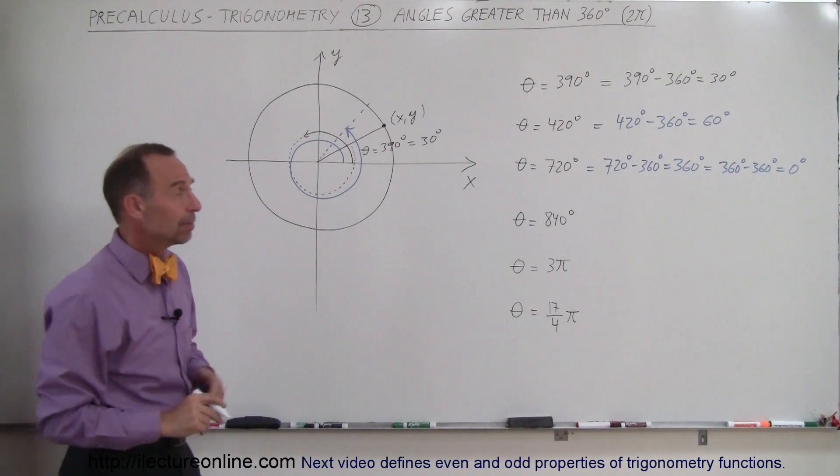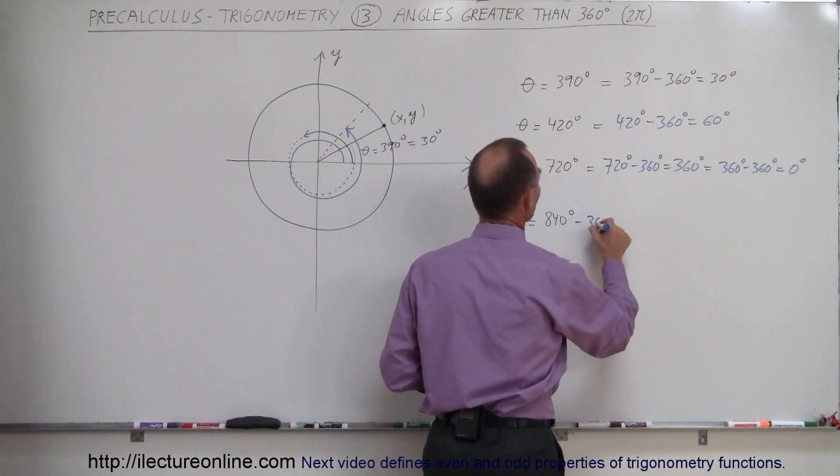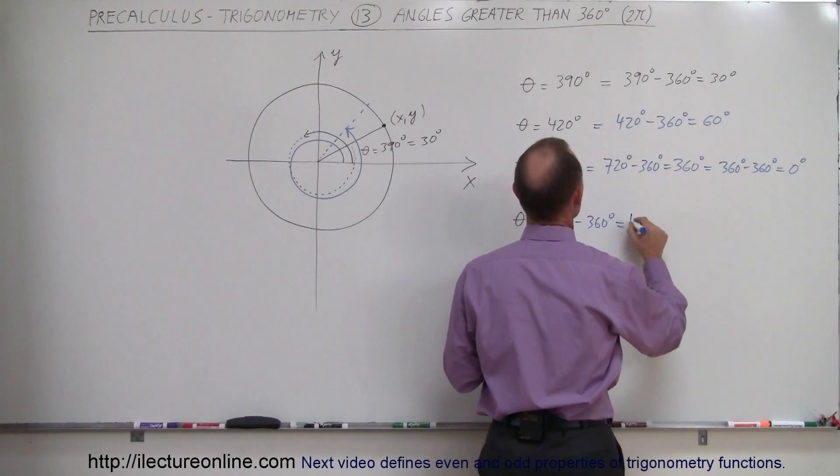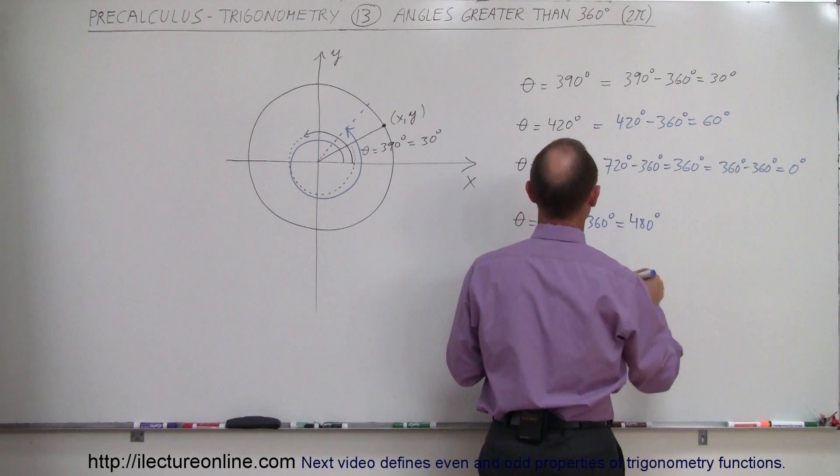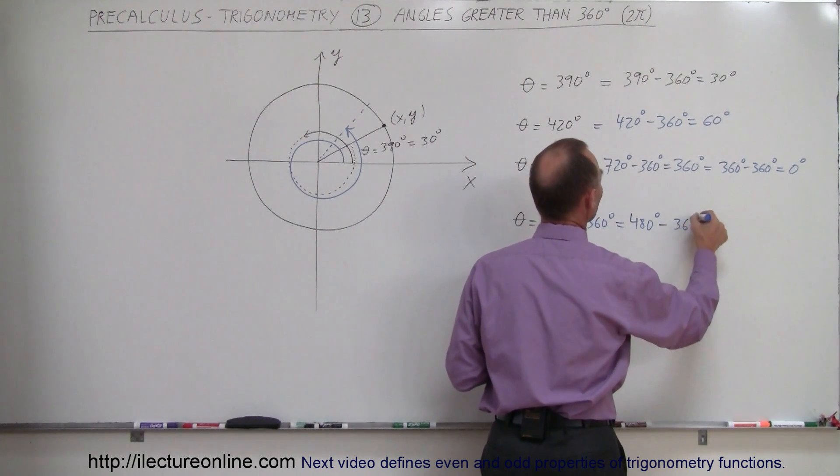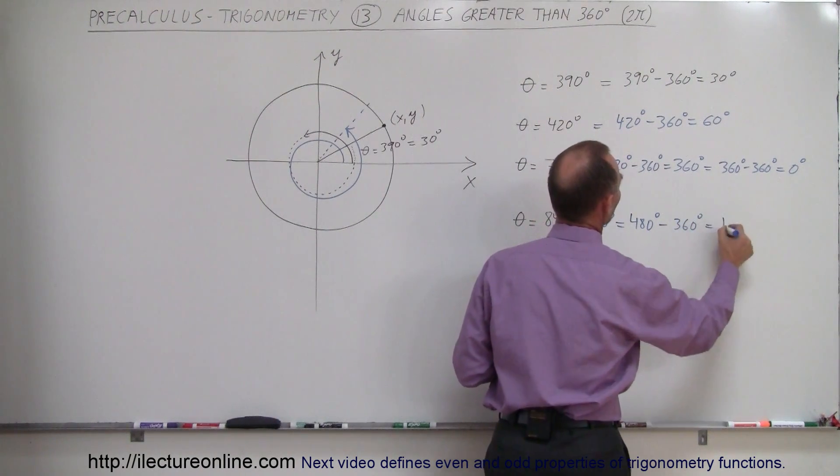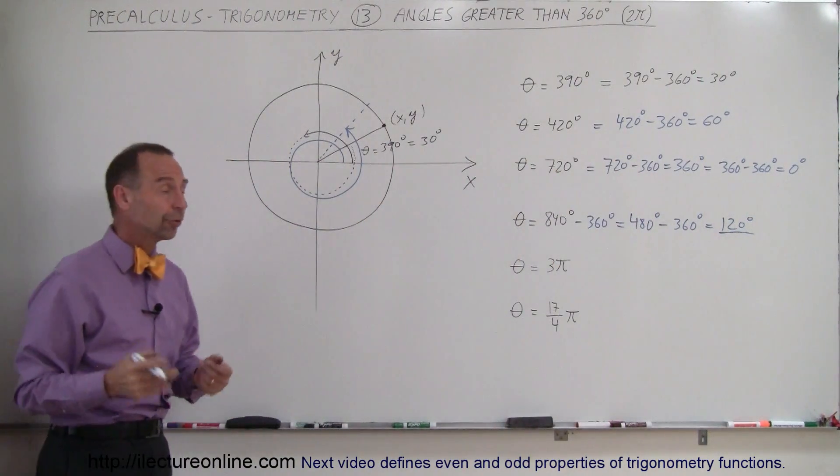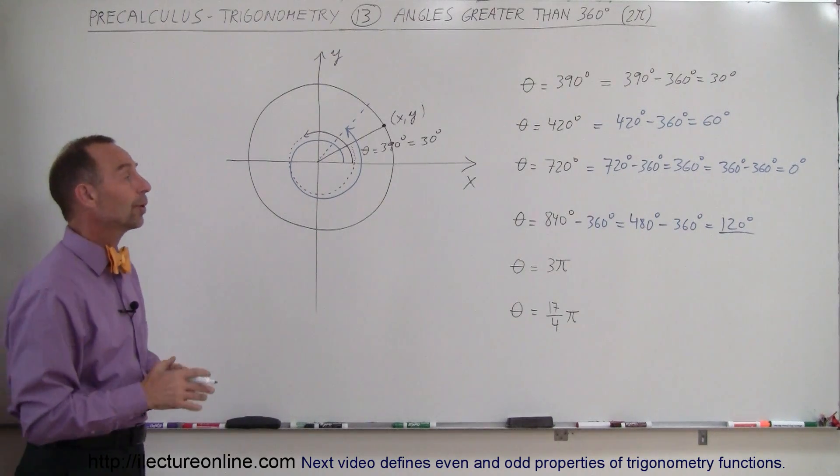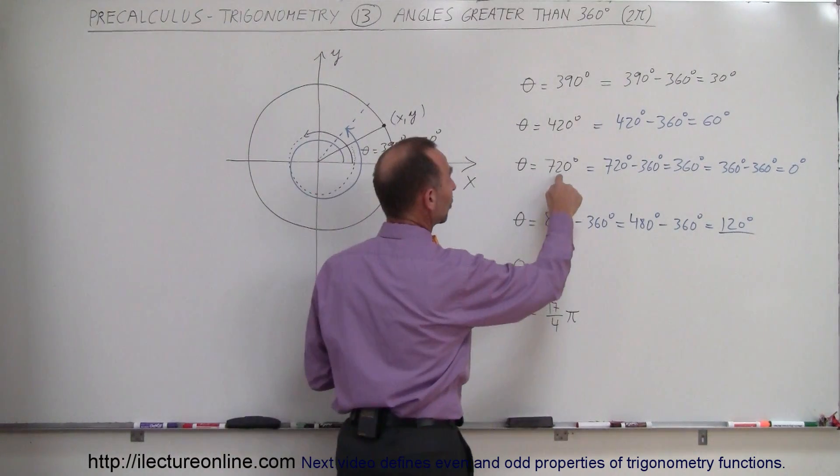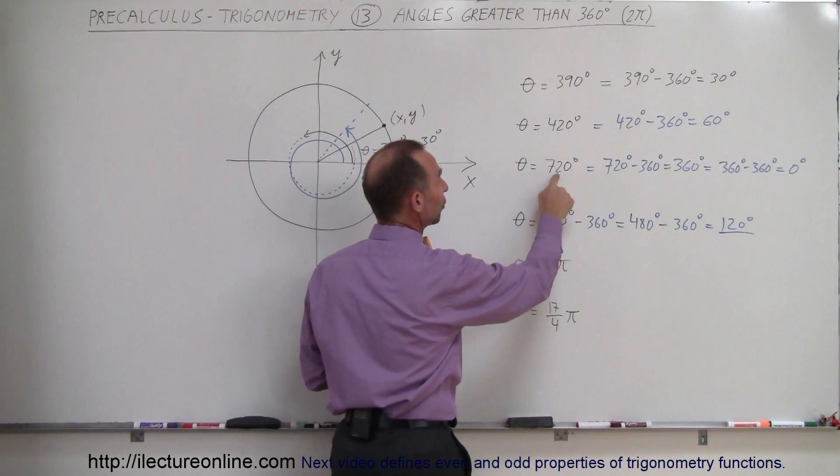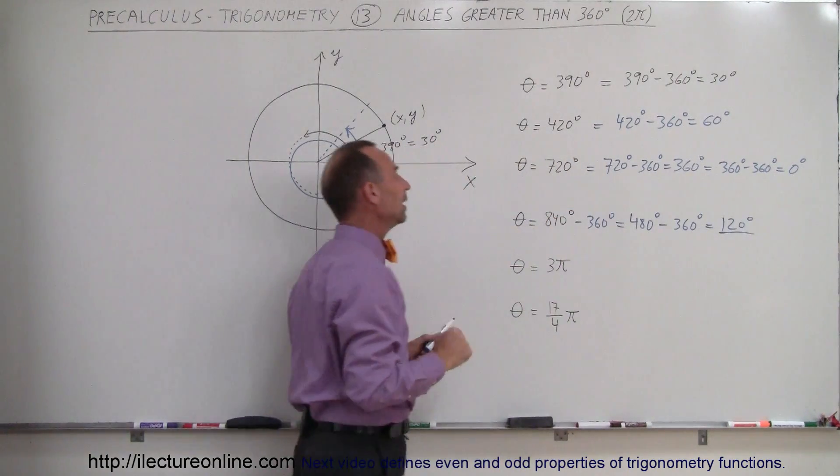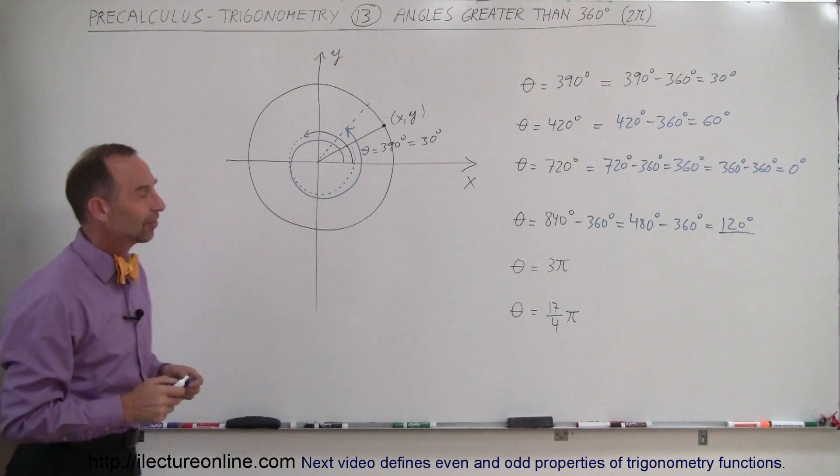How about 840? Well, we subtract from that 360 degrees and we get 480, and that's still bigger than 360, so subtract another 360 away from that, and that gives us 120 degrees. So there we go—that's the number between 0 and 360. So an 840 degree angle is the same as a 120 degree angle. Notice that it's only 120 bigger than 720. 720 is already the same as 0, so add 120 to 0, you get 120, or you get 840—it's the same thing.